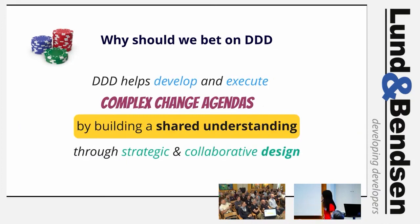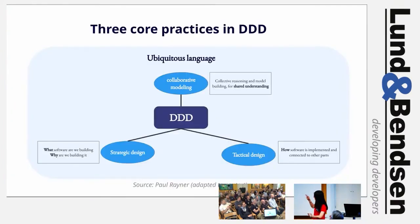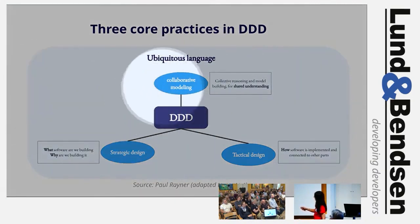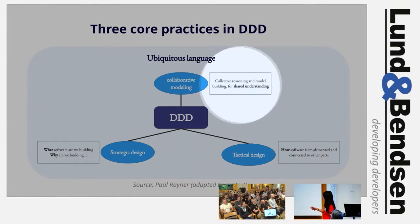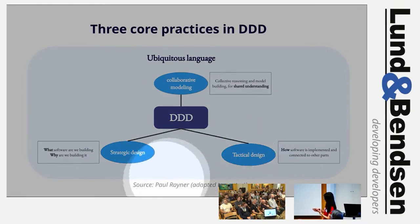To summarize: DDD helps develop and execute complex change agendas by building a shared understanding through strategic and collaborative design. That leads to the next portion of the talk — a turbo intro of DDD in the next half hour. I will most likely not get time to cover tactical design. My walkthrough will cover three core practices in DDD: collaborative modeling, strategic design, and tactical DDD. Collaborative modeling is the practice to strengthen collective reasoning and model building for this shared understanding.